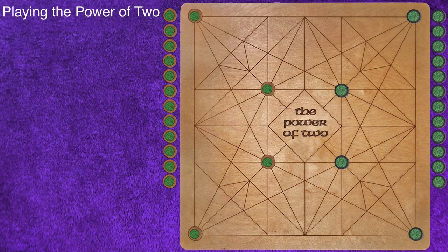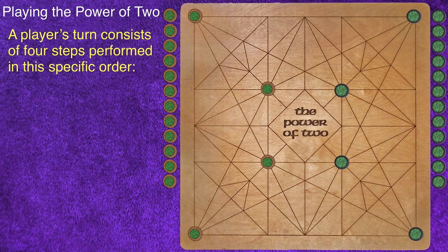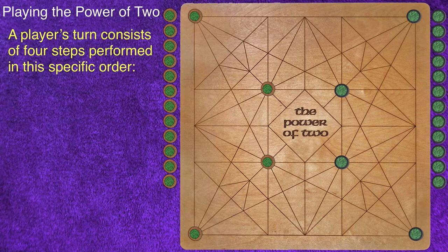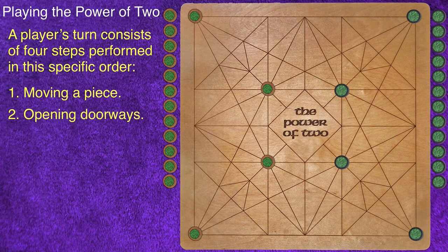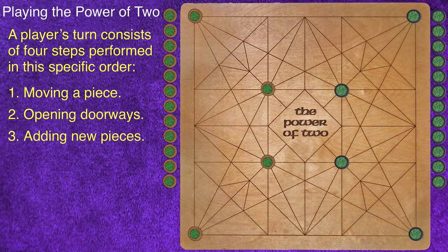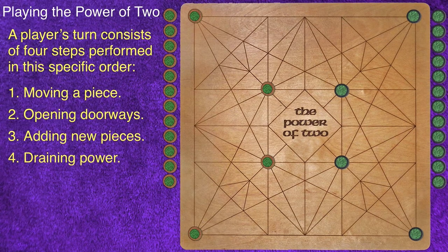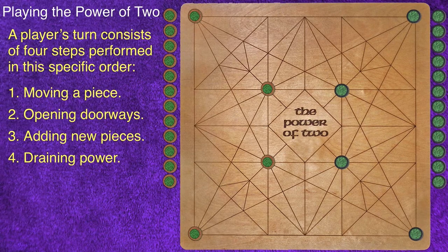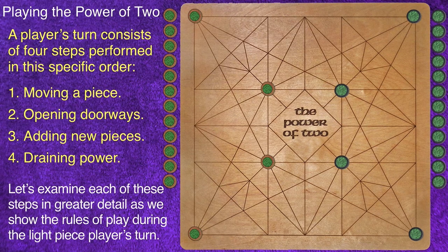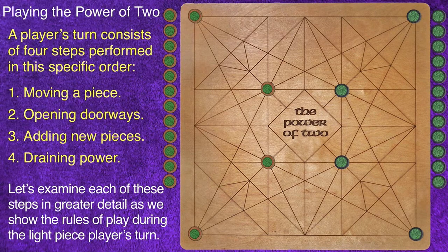Playing the Power of Two: A player's turn consists of four steps performed in this specific order: Moving a piece, Opening doorways, Adding new pieces to the board, and Draining power from one or more pieces.